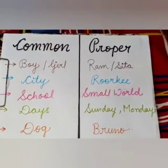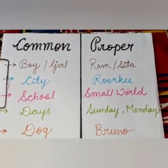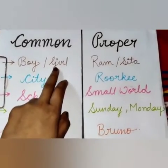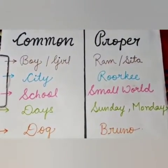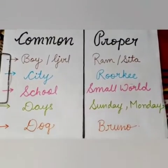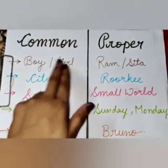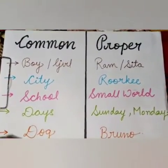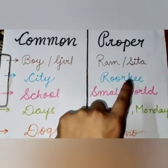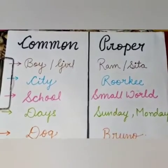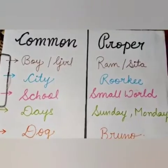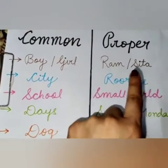Now children, let's understand both of them with an example. If we just say boy or girl, these are common nouns because we haven't defined the proper name of the girl or the boy. But when I say Ram or Sita, we have mentioned the particular name of a boy and a girl — that is why they are considered as proper nouns.